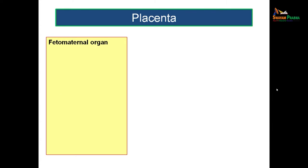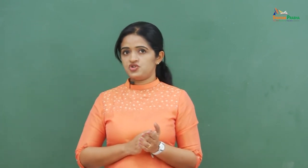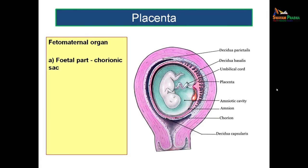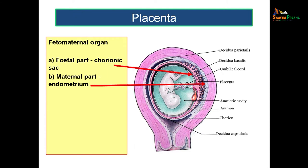Placenta is considered a fetomaternal organ — a structure which connects the fetus with the mother. As the word implies, there will be a fetal part, which is part of the chorionic sac, and a maternal part belonging to the endometrium. The fetal region belongs to the chorionic sac while the maternal region is the endometrium.